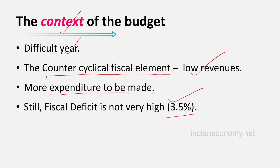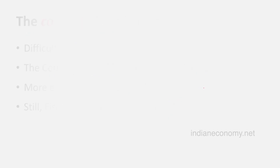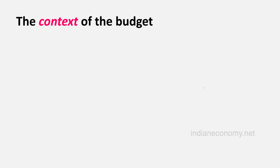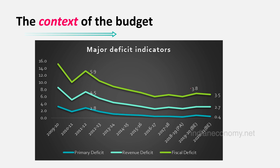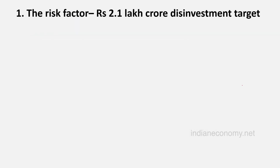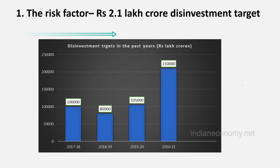We can see the trend in fiscal deficit from this diagram. During the last year, as per the revised estimate, the fiscal deficit soared up to 3.8% of GDP. For the next year — that is 2020-21 — it is estimated to be 3.5% of GDP. Now we consider the most important feature of this year's budget, which is a key risk factor.